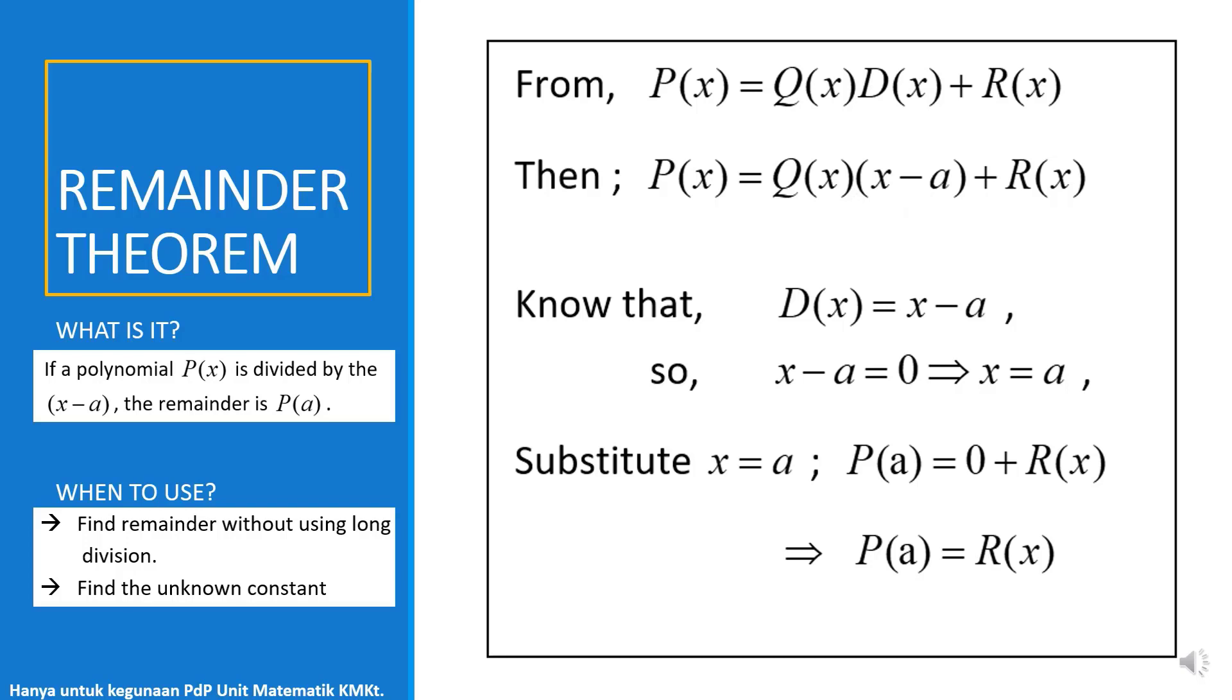So if we substitute into the equation, this part will get 0. That's why we have P(a) equal to 0 plus R(x), that is remainder. That's why when we substitute the value of a, we get remainder.